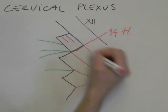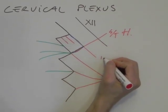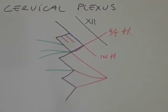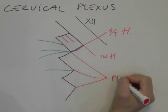And this, from the ansa cervicalis, is direct to the infrahyoid muscles. Then we have the big nerve here, that is the phrenic nerve.